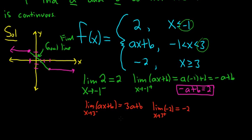We want the limit to exist at 3. That means the one-sided limits must exist, which they do, and they must be equal. Therefore, 3a plus b is equal to negative 2. So we have two equations and two unknowns, and now we'll solve the system of equations.